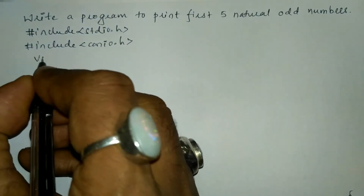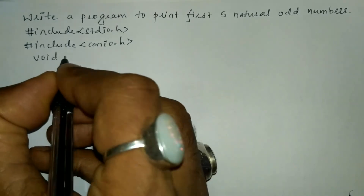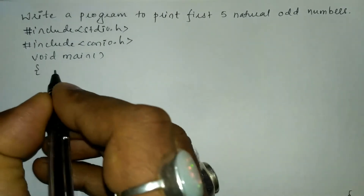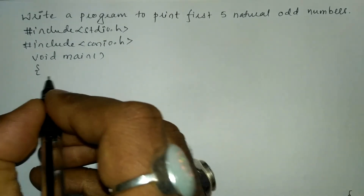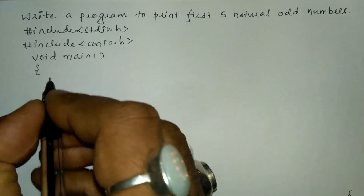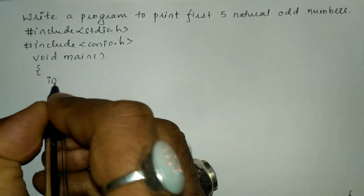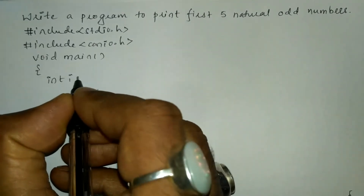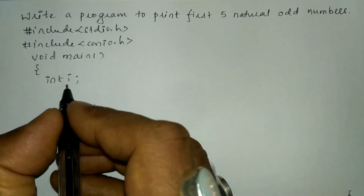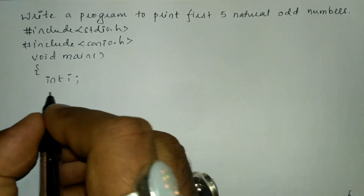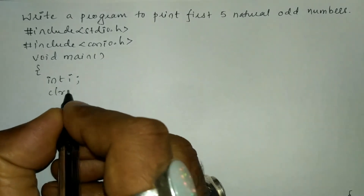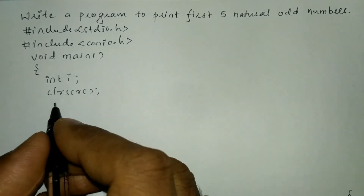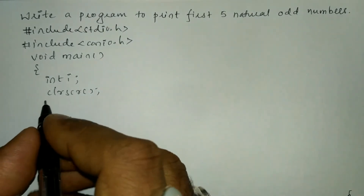Now let us write the void main function with a curly open brace. In the declaration section I'm going to declare a variable called i of type integer, and then I'll write the clrscr function which is used to clear the screen.